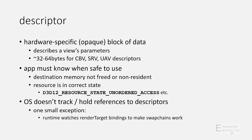There's no OS tracking of what's in a descriptor or even the existence of a descriptor. There's one small exception, and that's render target bindings, where the runtime does have to track and inspect render target descriptors in order for it to make swap chains work. That's considered to be a small overhead because the frequency of render target changes is extremely low compared to the amount of switching of other types of bindings like textures or constants.